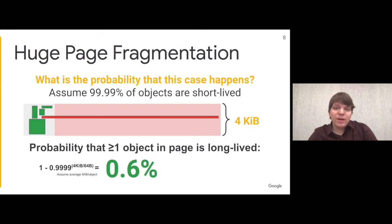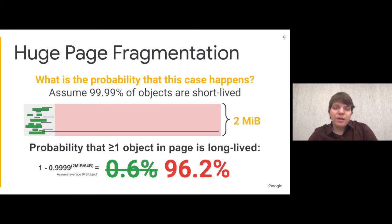It turns out this is not much of a problem with four kilobyte pages. If 1 in 10,000 objects is long-lived, the probability that a given page contains a long-lived object is around 0.6%. This changes completely with huge pages, because these probabilities increase exponentially. With 2MB huge pages, the likelihood that a page contains a long-lived object is almost 100%.